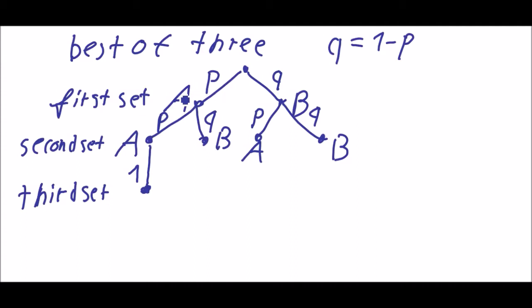And if A and B have won the first and the second set, then we have this probability p and q that A wins and B wins. Of course the same holds if B wins the first set and A the second set. That means we have A and B with probabilities p and q. And in the last case we don't have to play. And with probability 1, B wins.